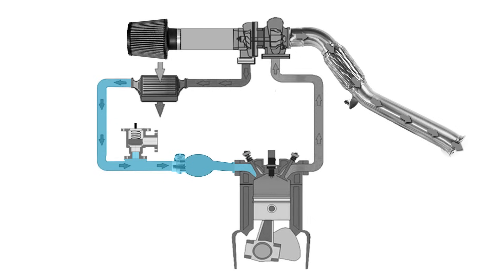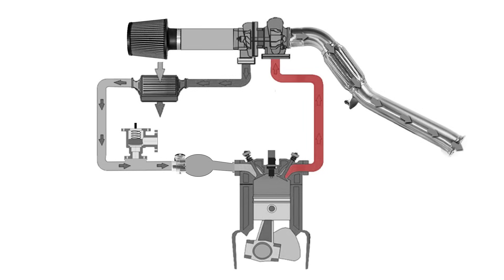From the throttle body it goes into the intake manifold, inside the engine goes through the combustion process, the exhaust comes out, runs through the exhaust manifold to the turbo, which continues to spin the turbine, and then goes out through the exhaust.